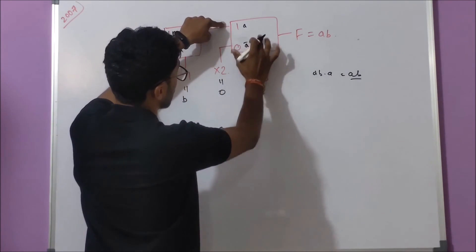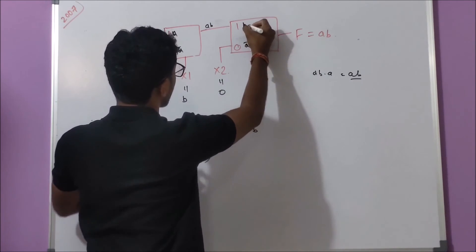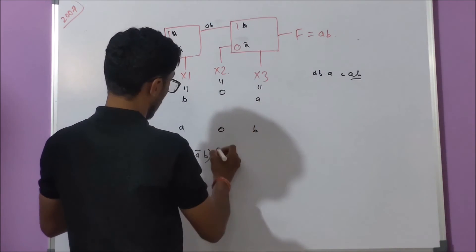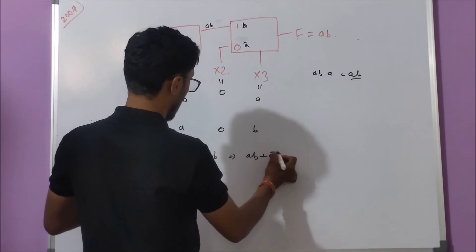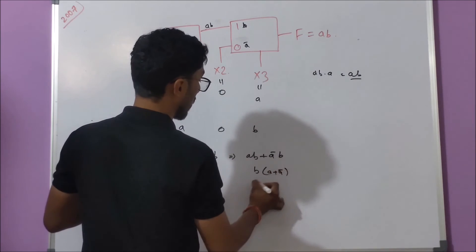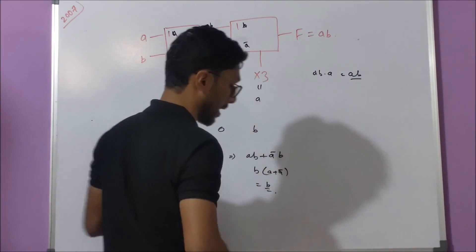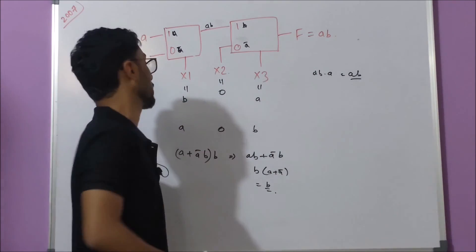And here we gave 0, so this thing doesn't matter. Here we gave B, so this will become B, B into - we'll do multiplication with A. B plus A bar B - if we take B common, A plus A bar will be there, and finally B output will come. We tried another combination, but our output should have been ab, which wasn't coming.